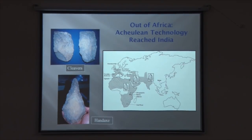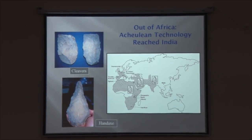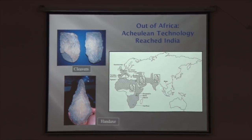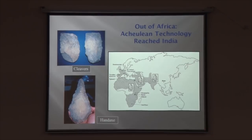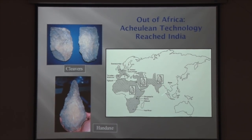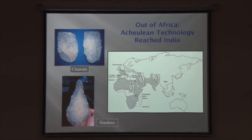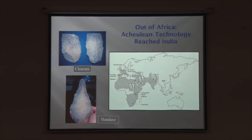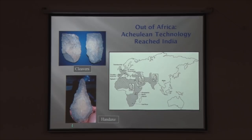Acheulean technology, associated with Homo erectus, reached India. Beyond northeastern India — into East Asia and Southeast Asia — Homo erectus is found, but Acheulean technology is restricted to Europe, Africa, and India. The stone tool technology of Homo erectus in Eastern Asia was very different. This division is known among archaeologists as the Movius Line. The cleaver and hand axe technology gradually evolved from early to middle to late Acheulean, reflected in how raw material was put to use and how minimum effort was employed to produce suitable artifacts.